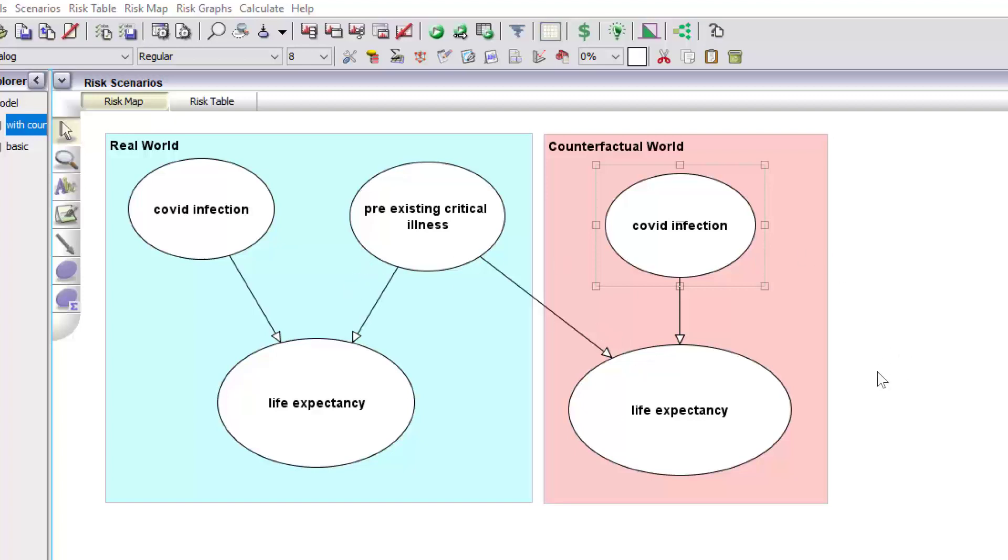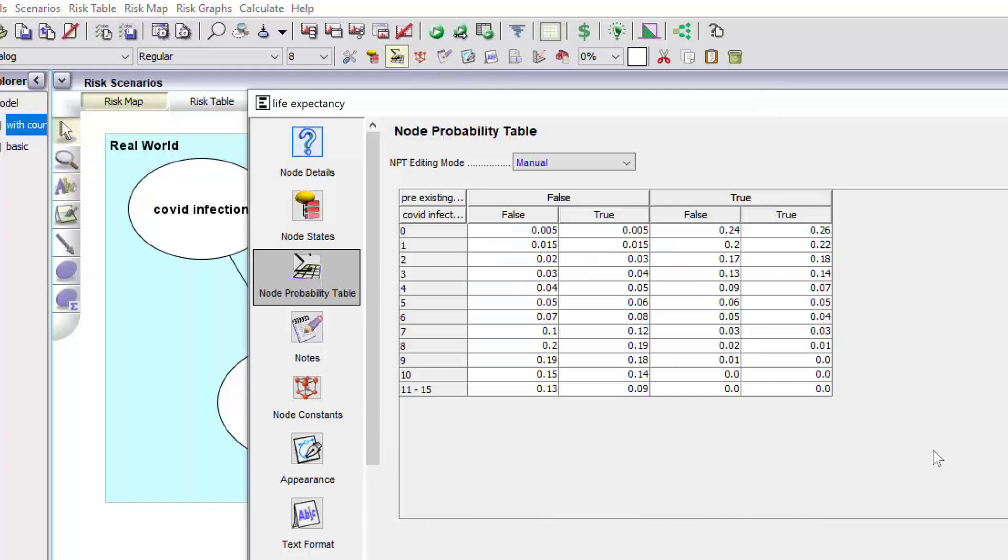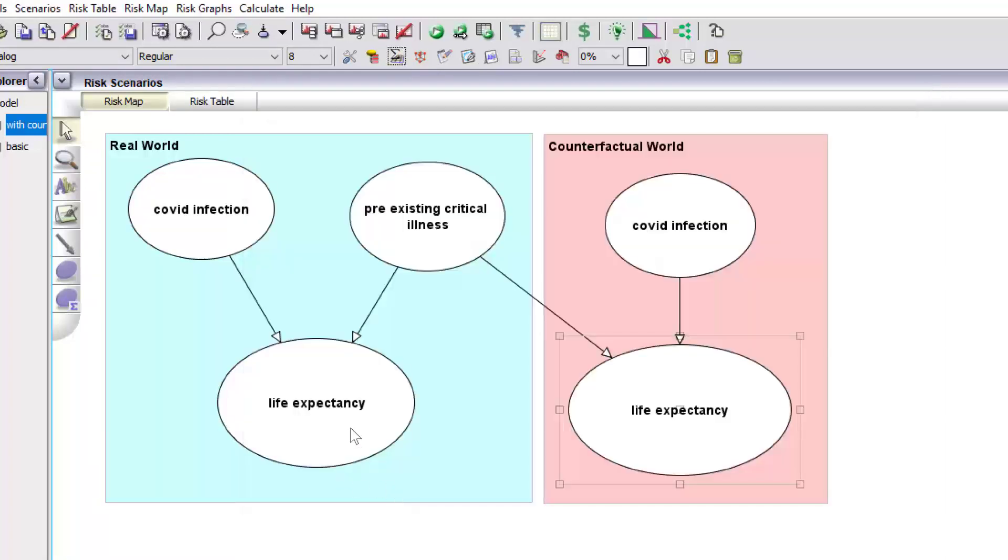They've got exactly the same prior and conditional probability tables. There's the prior for Covid infection and the probability table for life expectancy is exactly the same as the one over here.